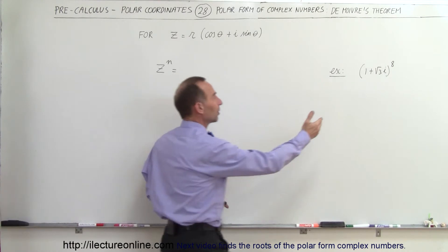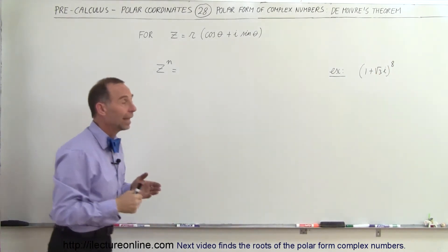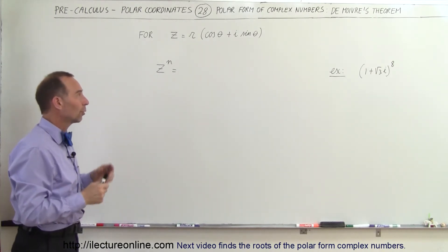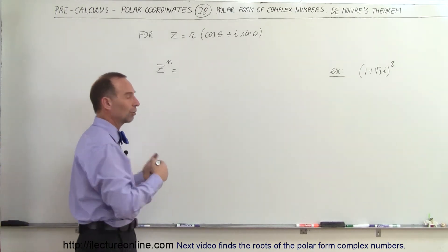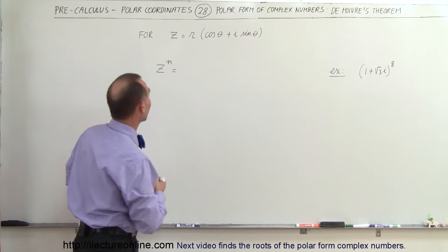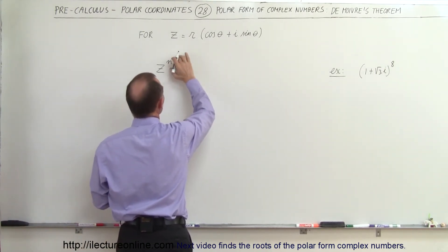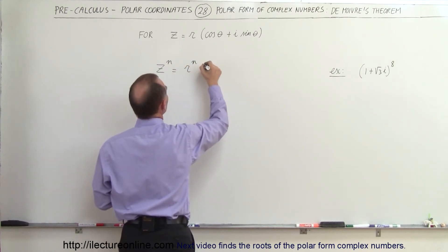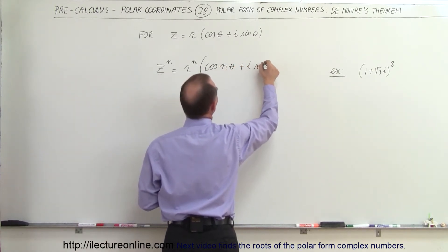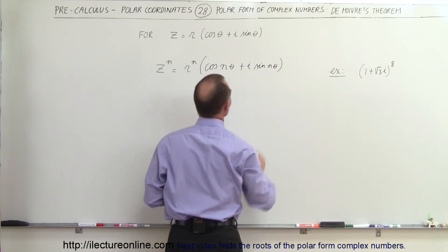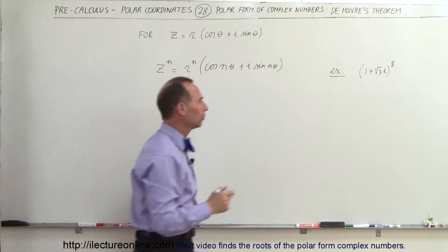So let's say we want to take the complex number 1 plus the square root of 3i and raise it to the 8th power. Do we have an easy way to do that? Once we convert that to polar form, it is easy to then multiply the number by itself multiple times. So when we take a number in polar form and raise it to an exponent n, this is equal to r to the n power times the cosine of n times the angle, plus i times the sine of n times the angle.